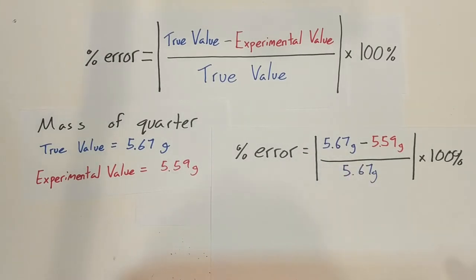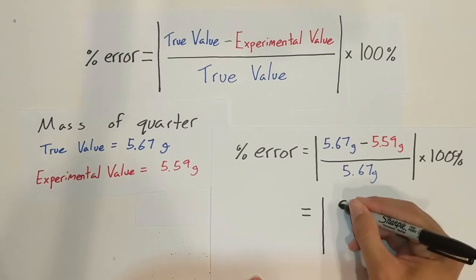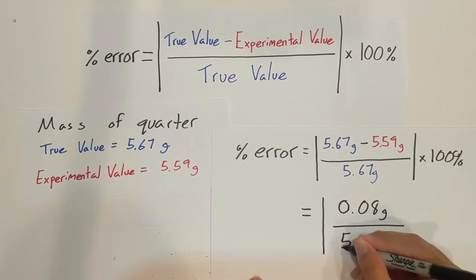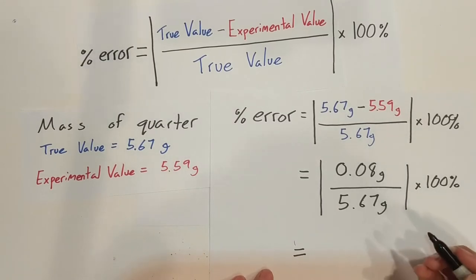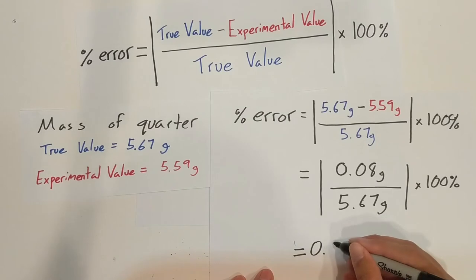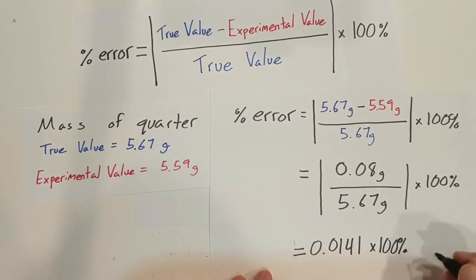So let's simplify this. In the middle, if we do 5.67 minus 5.59, we get 0.08 grams divided by 5.67 grams times 100. And then we could stick this into a calculator: 0.08 grams divided by 5.67 grams is going to be equal to 0.0141 times 100 percent, and our answer will be 1.41 percent error.